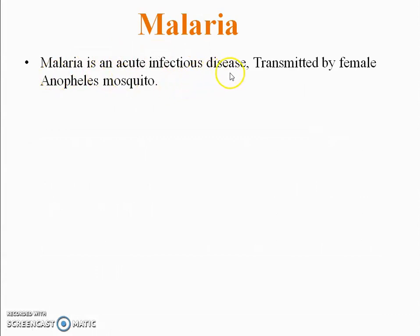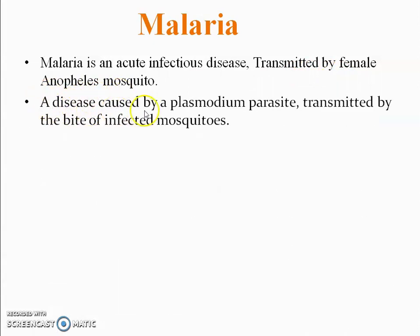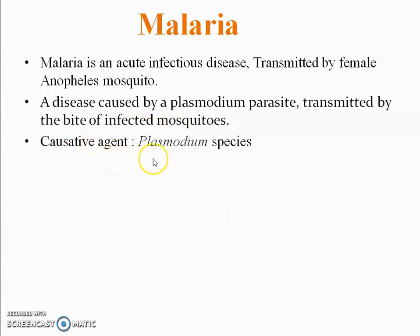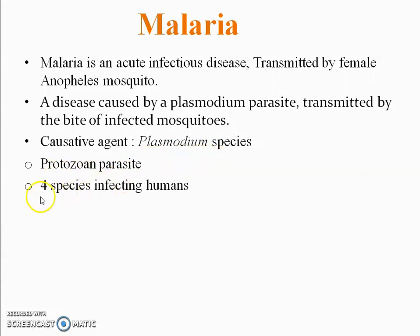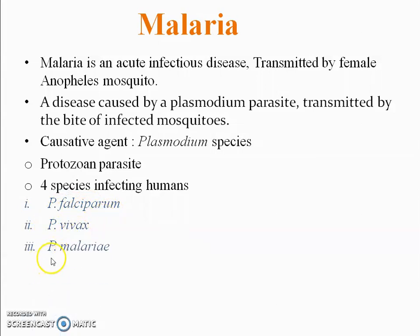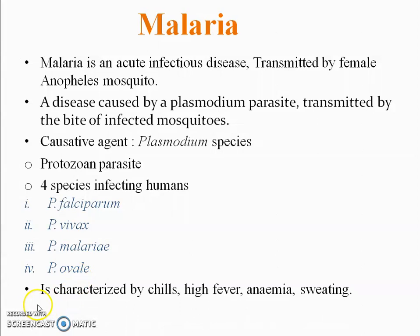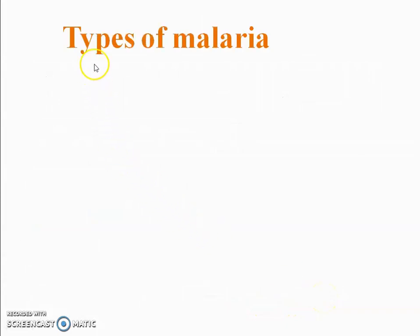First of all, we see what is malaria. Malaria is an acute infectious disease mainly transmitted by the female Anopheles mosquito. It is a disease caused by Plasmodium parasites. The causative agent is Plasmodium species — protozoan parasites — and mainly four species infect humans: Plasmodium falciparum, Plasmodium vivax, Plasmodium malariae, and Plasmodium ovale.